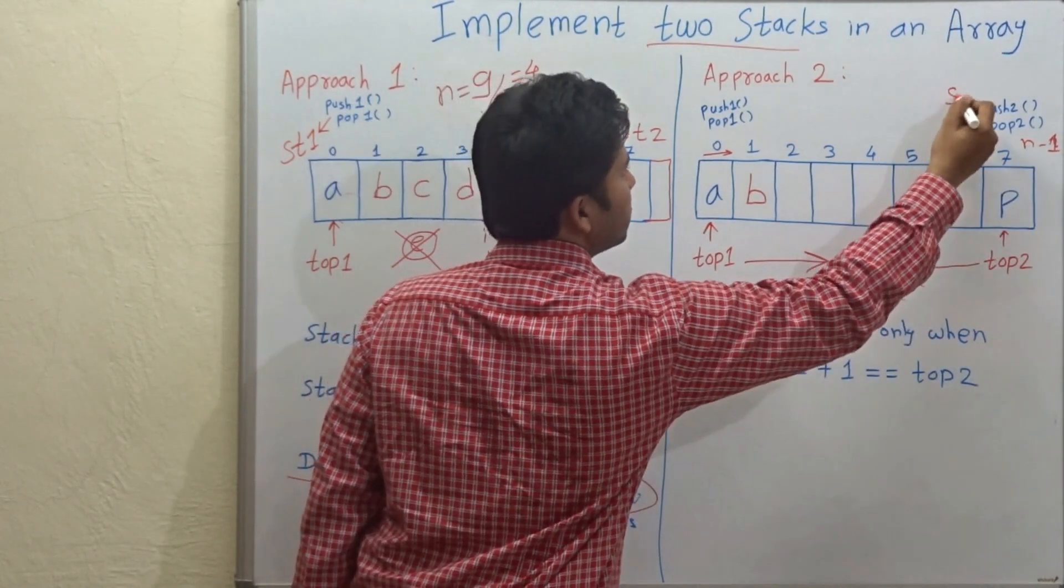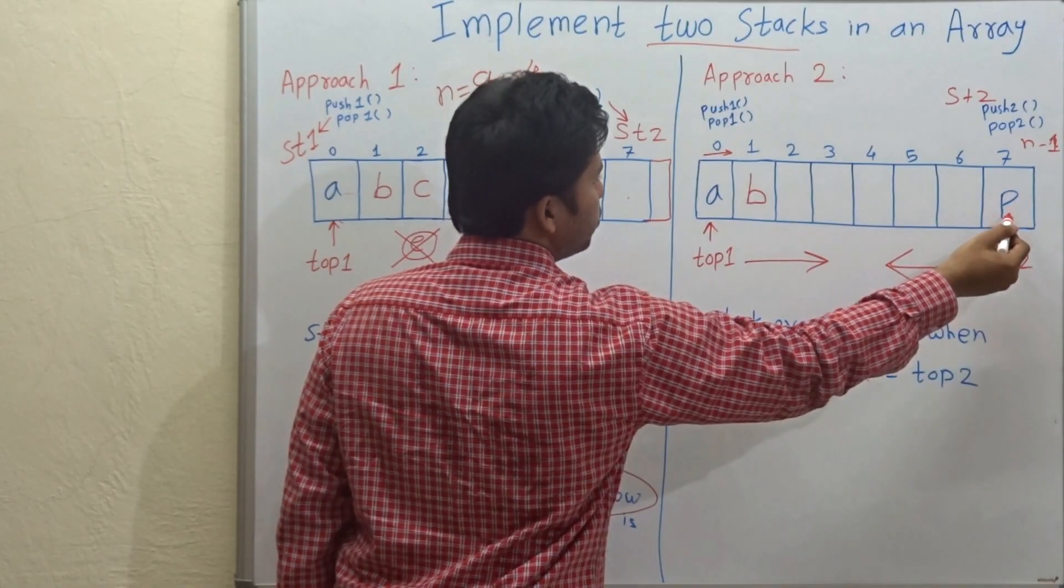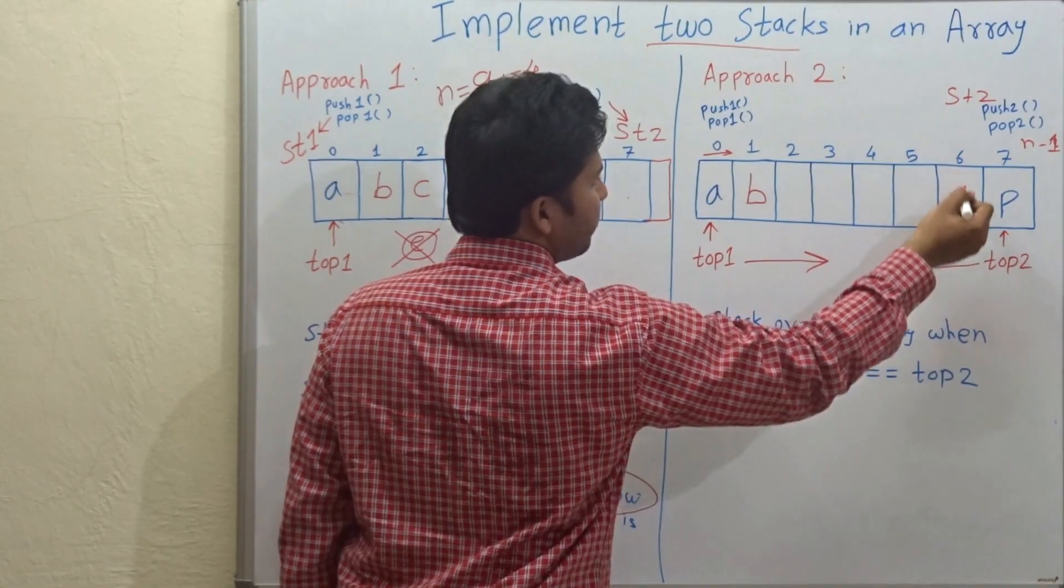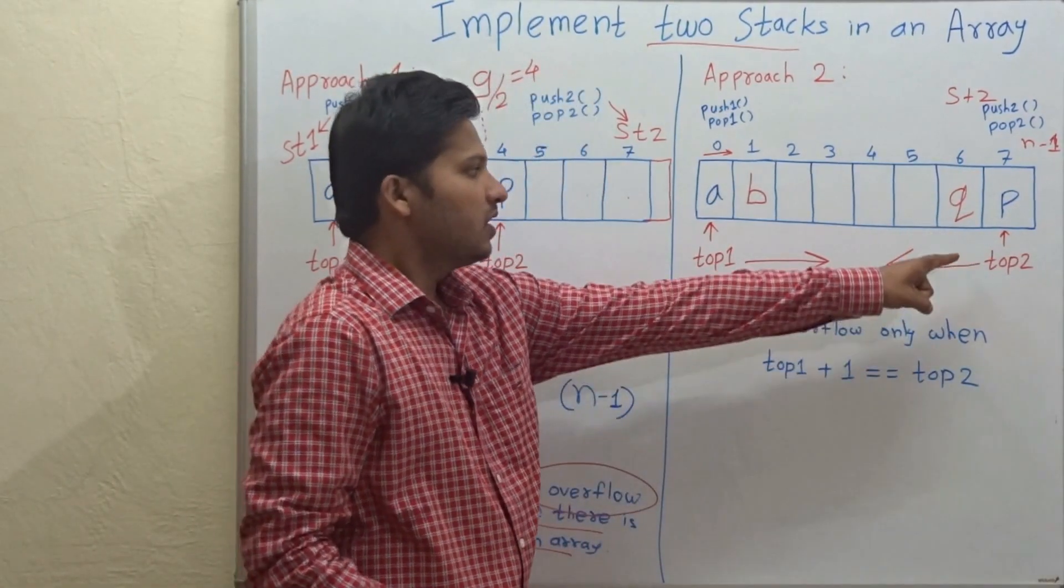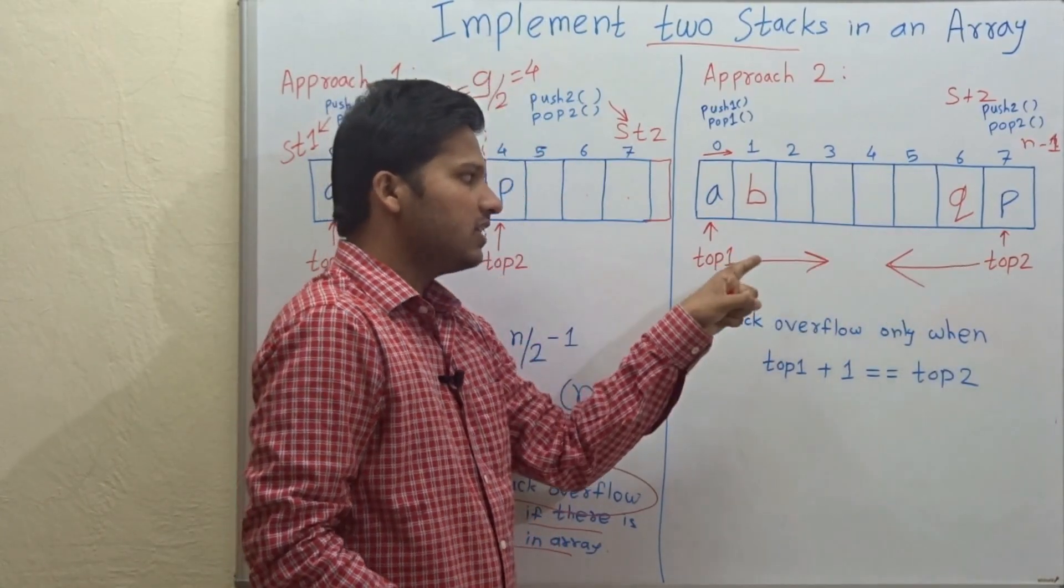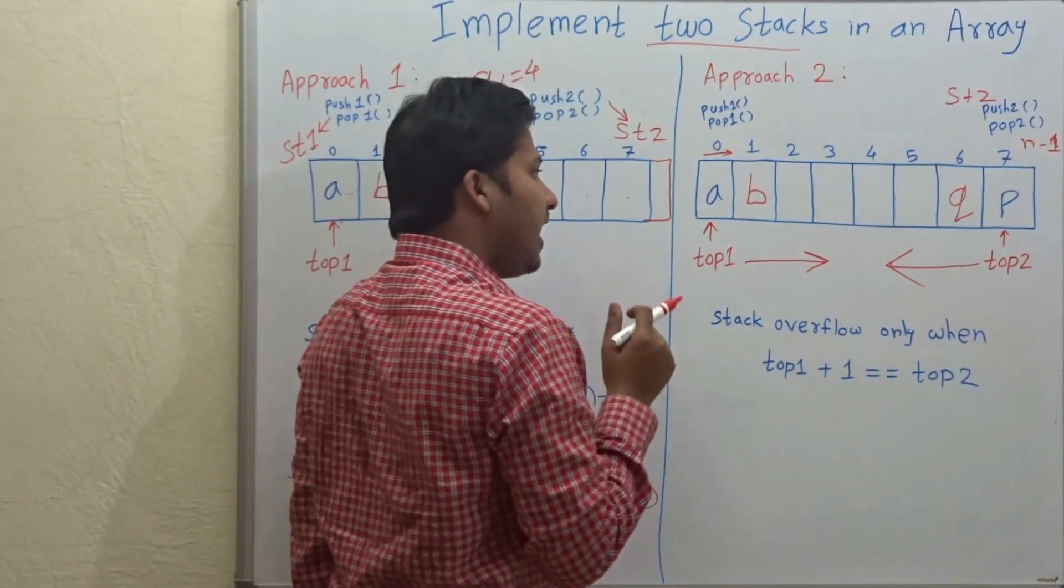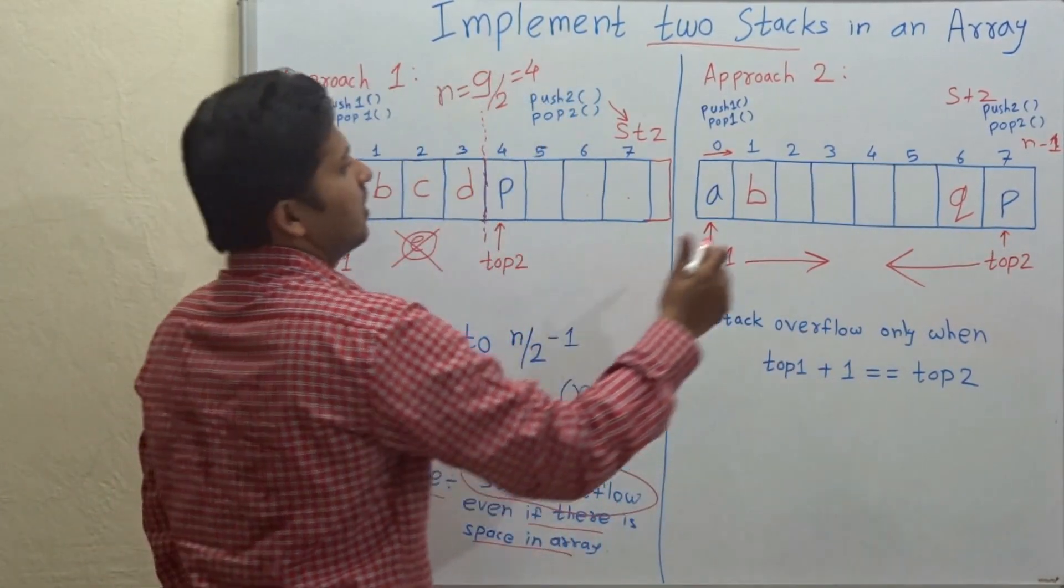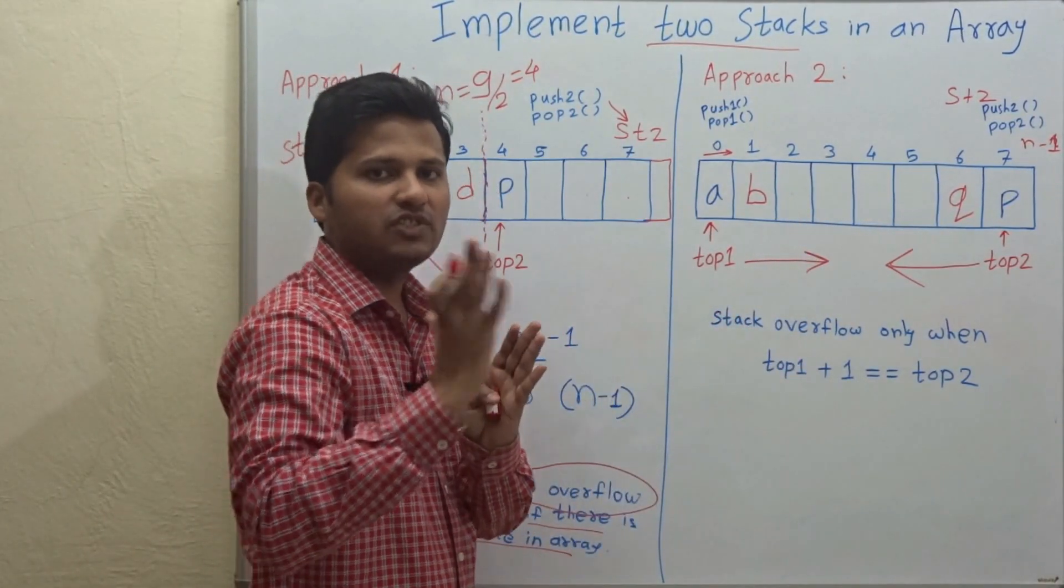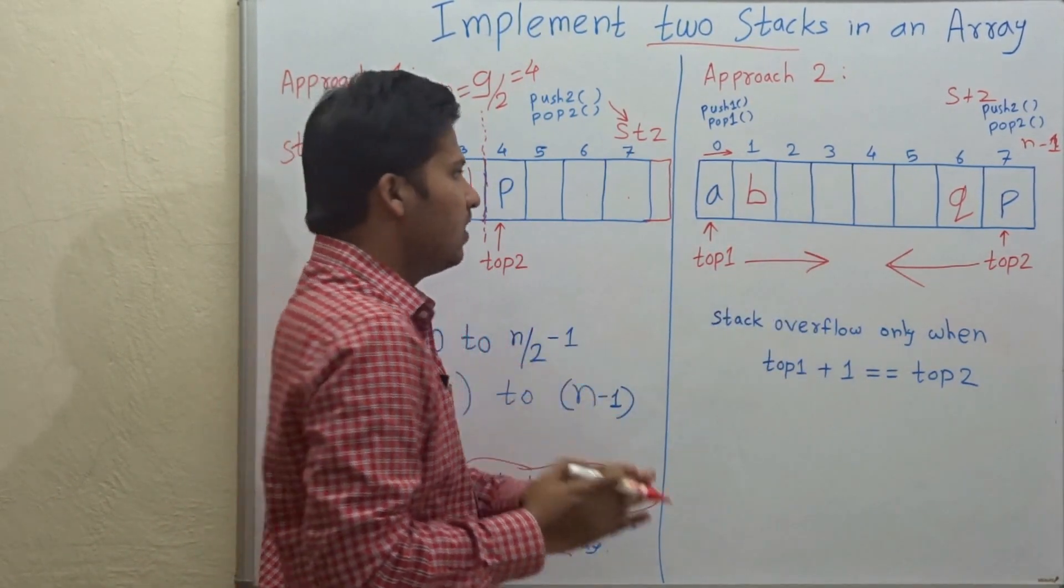So, for P, if we push the next element, then next element will be pushed at position 6. Which means, this array extends in left direction and this array extends in right direction. So, the advantage is that all the cells in this array are used space efficiently. Means there is space efficiency in this array.